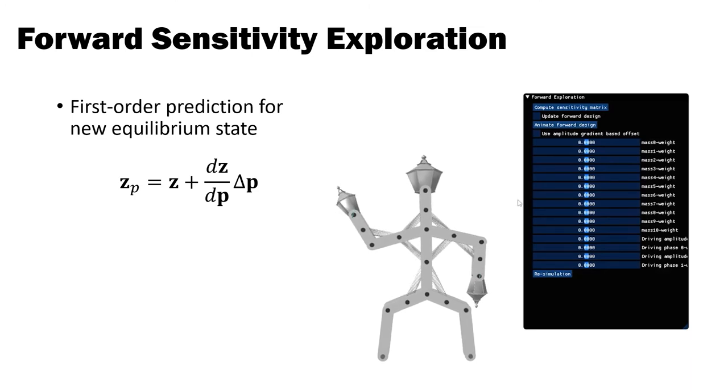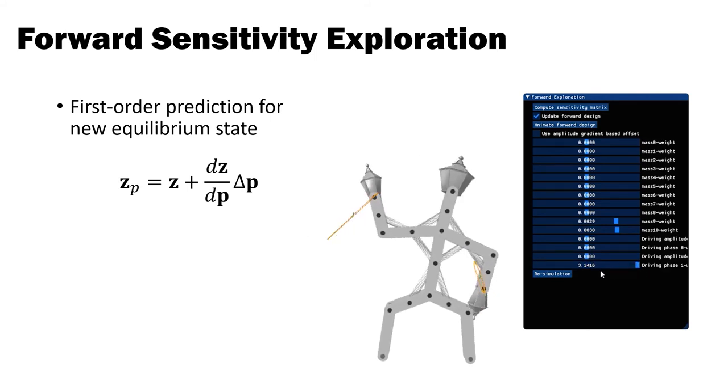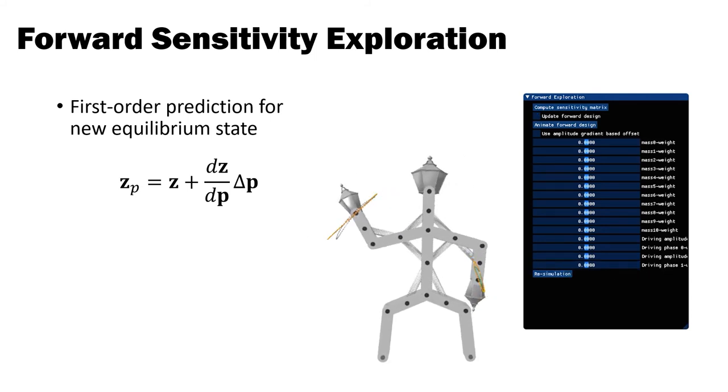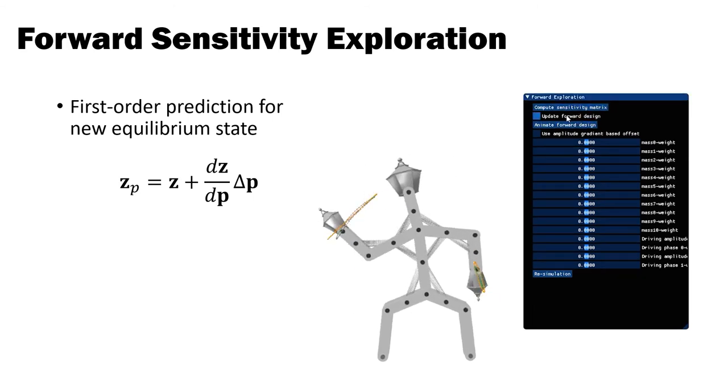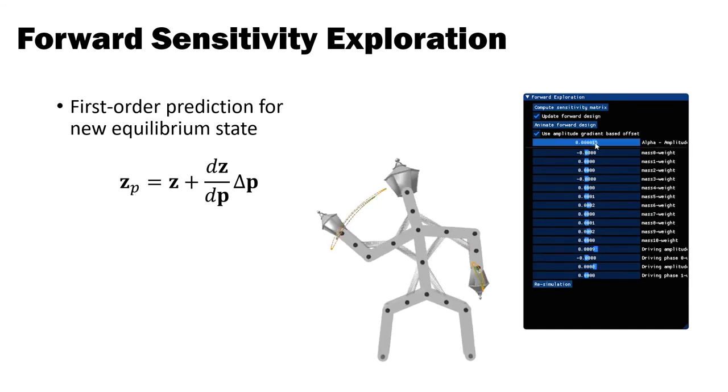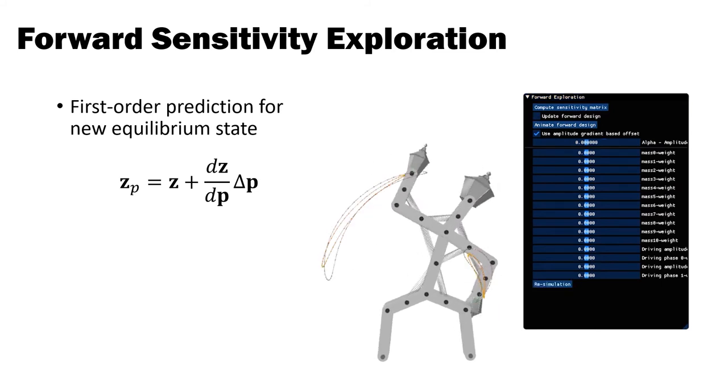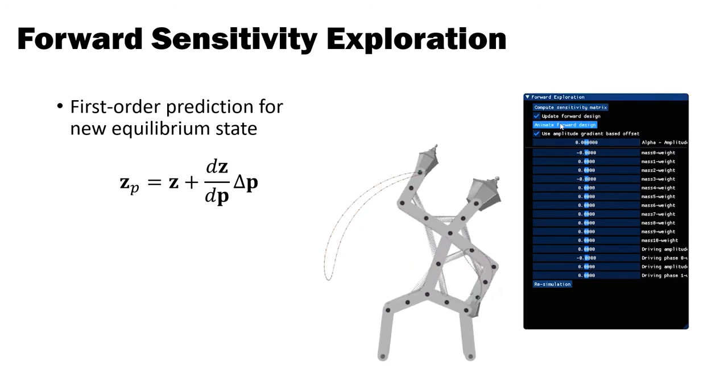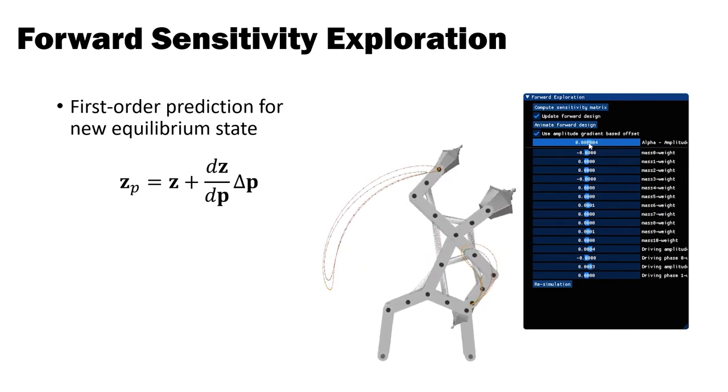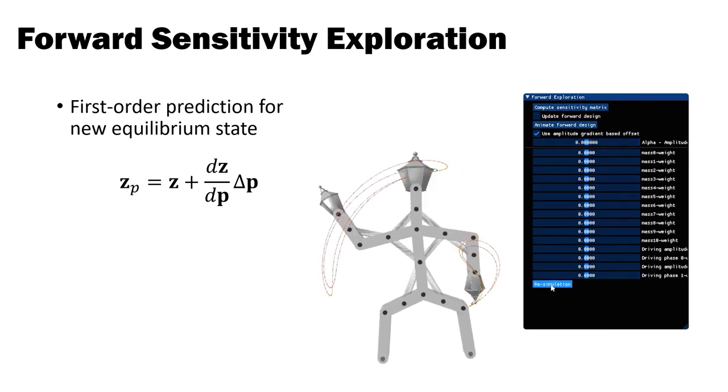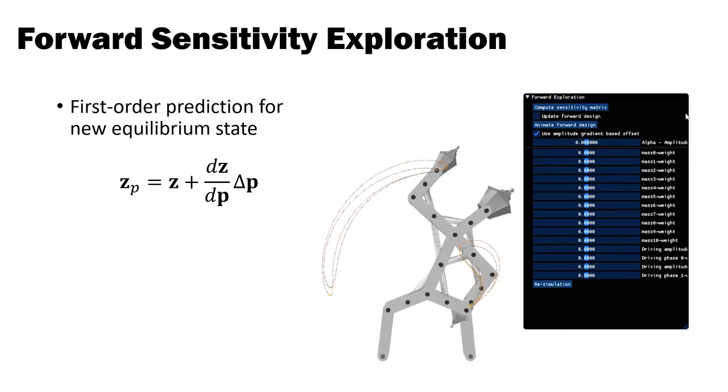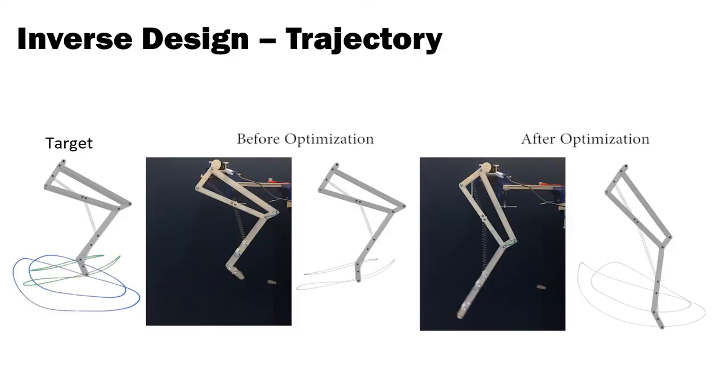The sensitivity matrix provides an efficient tool for interactive exploration of the design space. In this example, the user explores parameter changes for nodal masses, as well as the driving amplitude and offset for the two feet. The predicted change in steady state motion, computed using the sensitivity matrix, is shown immediately while the user changes the sliders. After larger parameter changes, the user invokes an update operation that leads to a full re-simulation with new parameters and re-computation of the sensitivity matrix. This process takes about three seconds for this example.